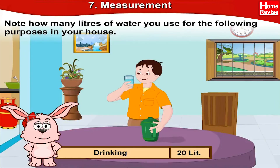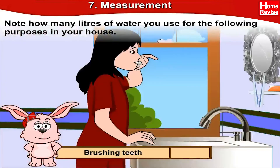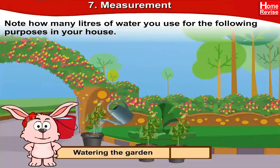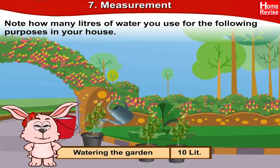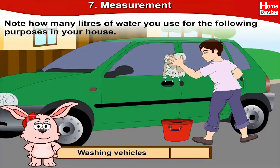For drinking, 20 liters of water is used by everybody in the house. For making 10 cups of tea, one-and-a-half liters of water is used. For brushing teeth, one-fourth liter (a quarter liter) of water is used. For watering the garden, approximately 10 liters of water is used. For washing vehicles, 20 liters of water is used.